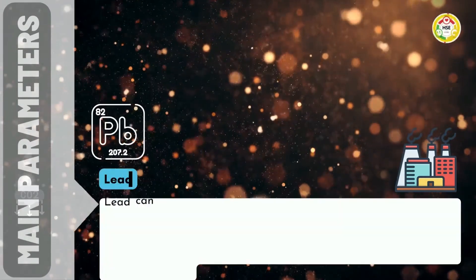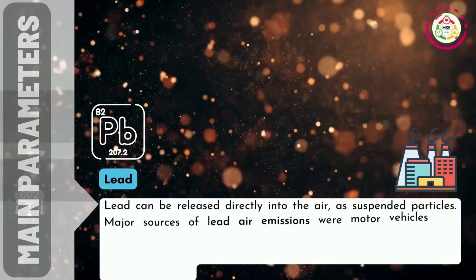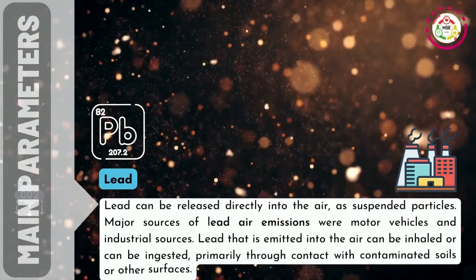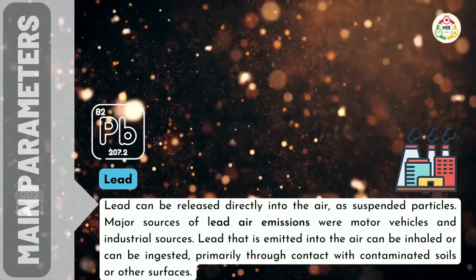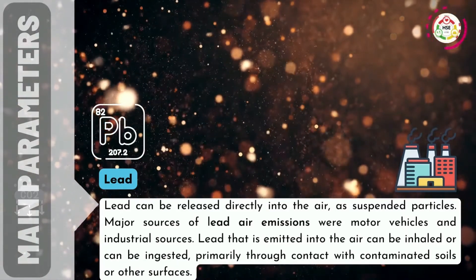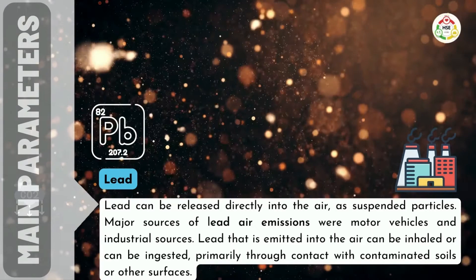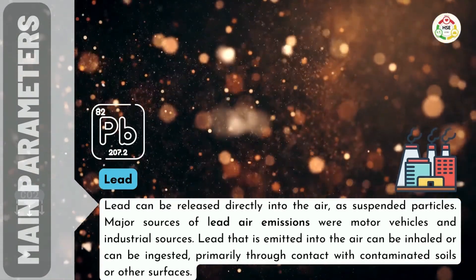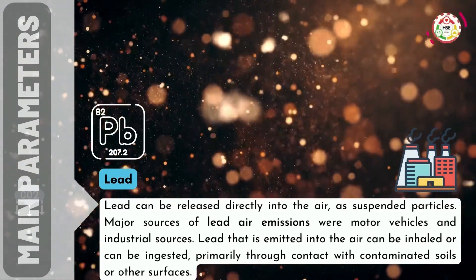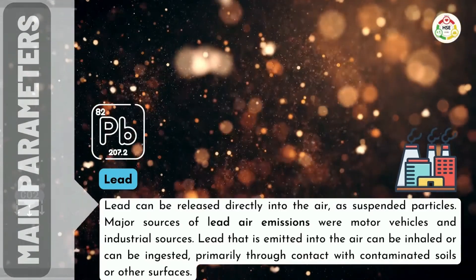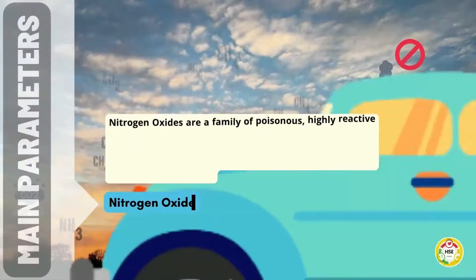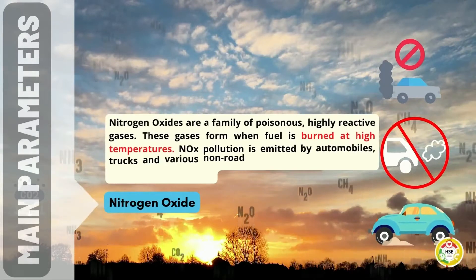Lead can be released directly into the air as suspended particles. Major sources of lead air emissions were motor vehicles and industrial sources. Lead that is emitted into the air can be inhaled or can be ingested, primarily through contact with contaminated soils or other surfaces.